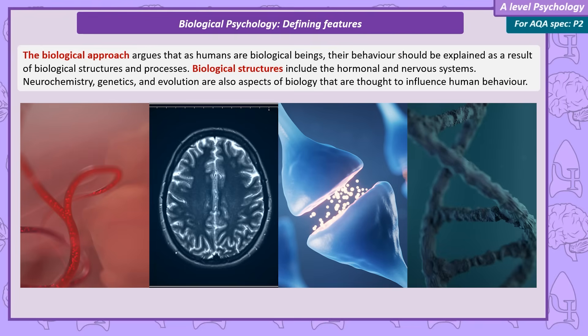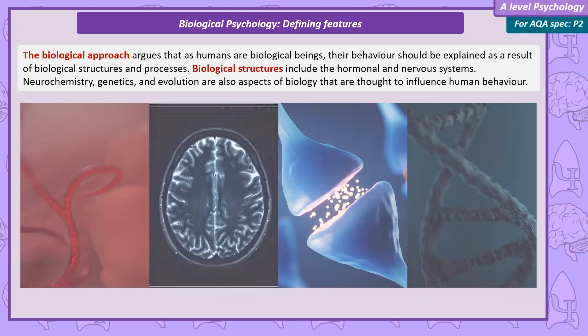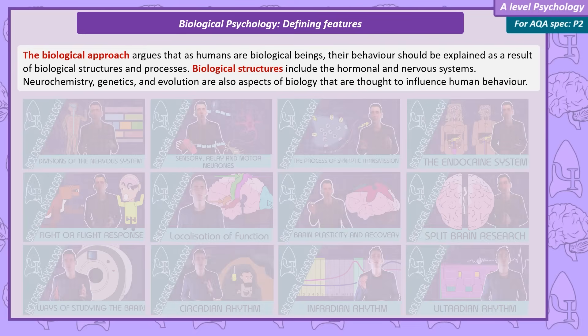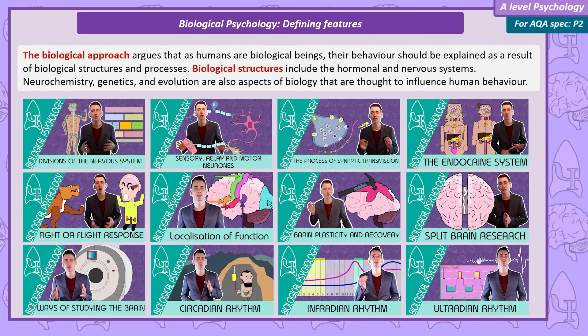Biological structures, neurochemistry, genetics, and evolution are all different aspects of biology that influence human behaviour. Biological psychology is a fundamental part of your psychology course, so much so that there's an entire unit just on biopsychology.